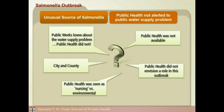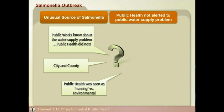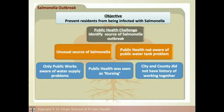Let's summarize the root causes we've considered. By asking more questions and digging deeper, we identified three root causes. The objective was to prevent residents from being infected with salmonella, and the public health challenge was to identify the source of the outbreak. There were two intermediate causes: the unusual source of salmonella from the public water supply, and public health not being alerted to the breach. The three root causes were: the different levels of awareness of the water supply problem between public works and public health; the public health department being seen solely as a nursing services department; and the city and county not having a history of working together.